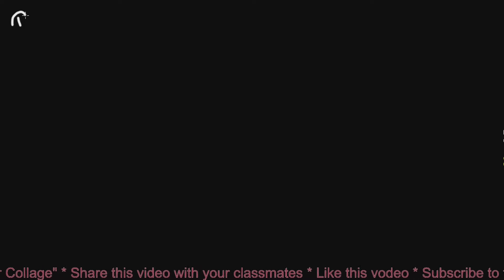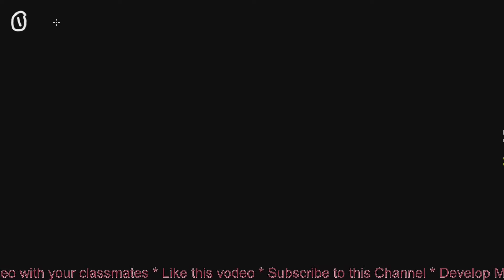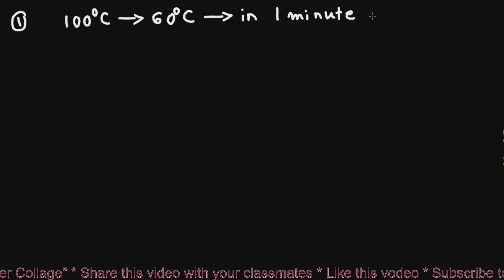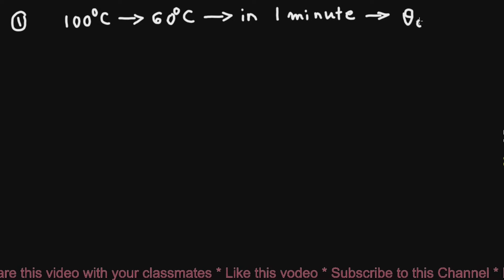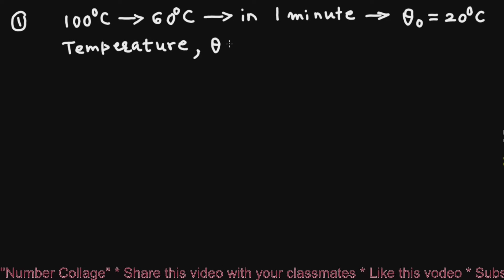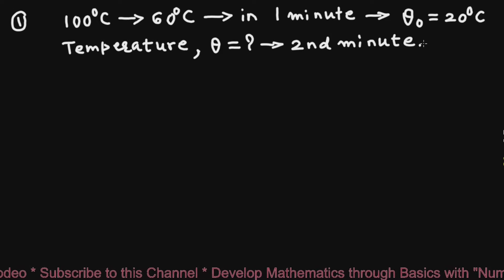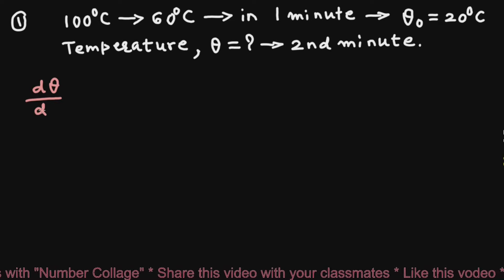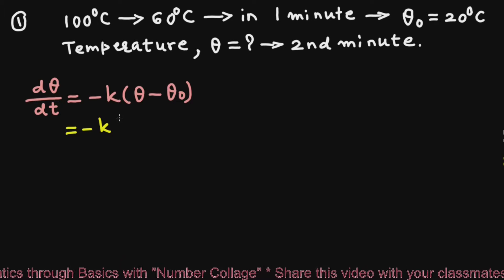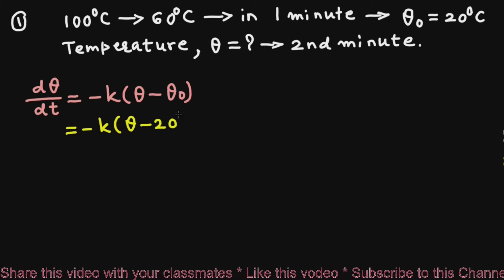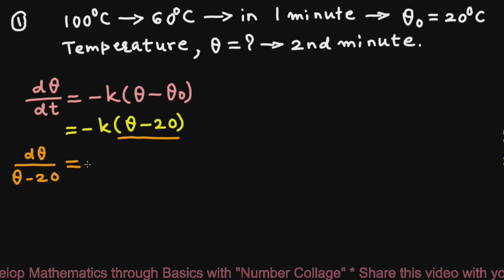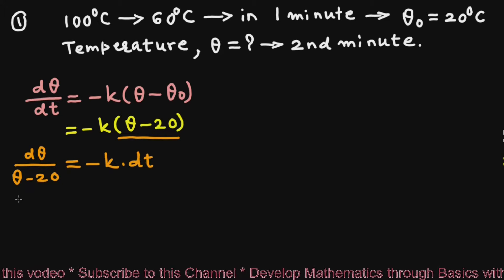In the first problem, it is given that the body temperature drops from 100°C to 60°C in 1 minute and the temperature of the surroundings θ₀ is 20°C. We have to find the temperature θ of the body at the end of the second minute. We have the rate of cooling dθ/dt = −k(θ − 20). Separating the variables, we write dθ/(θ − 20) = −k dt. Integrating,